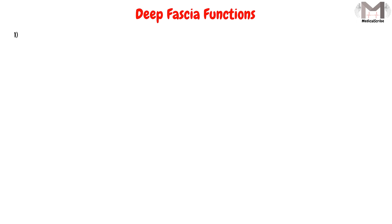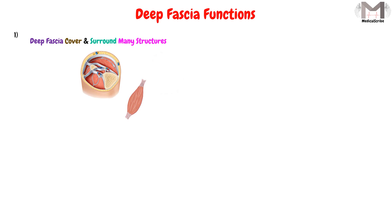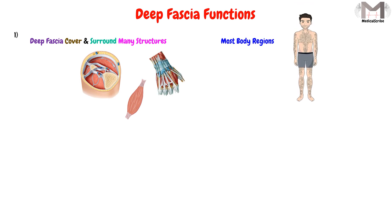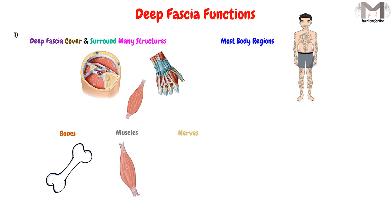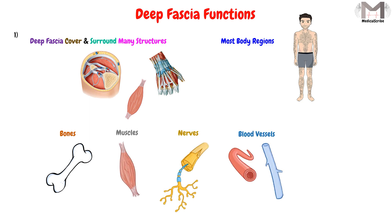The first function is that the deep fascia will cover and surround many structures and most body regions, including the bones, the muscles, the nerves, and the blood vessels, in which it will hold them in place.